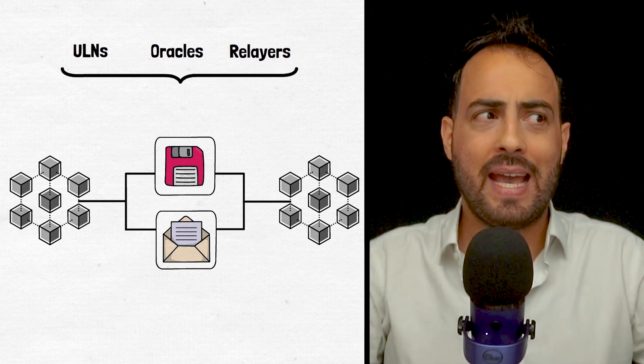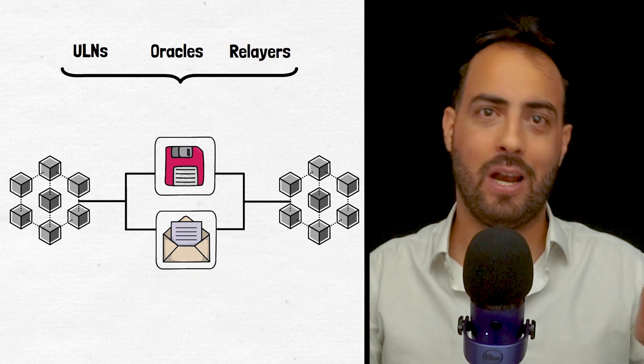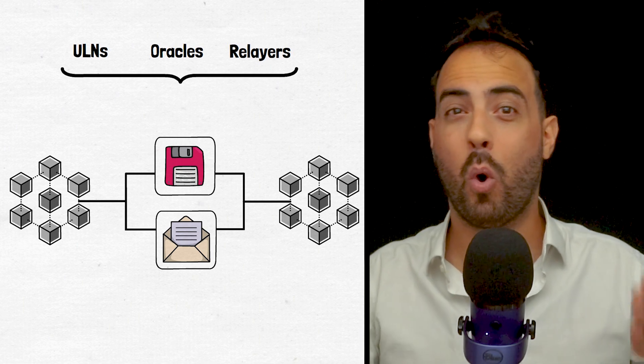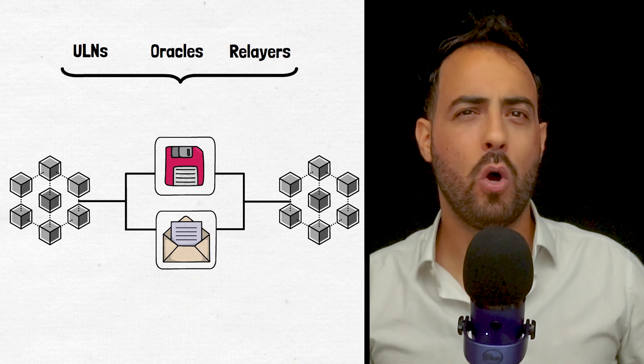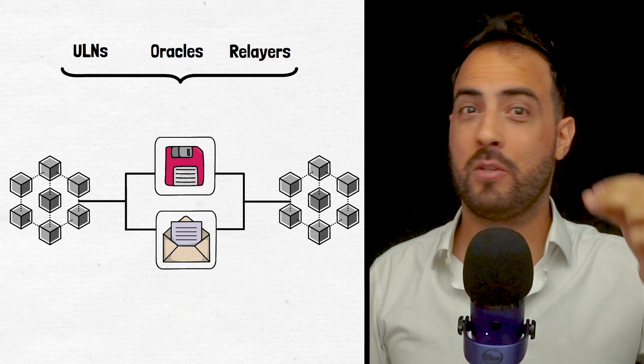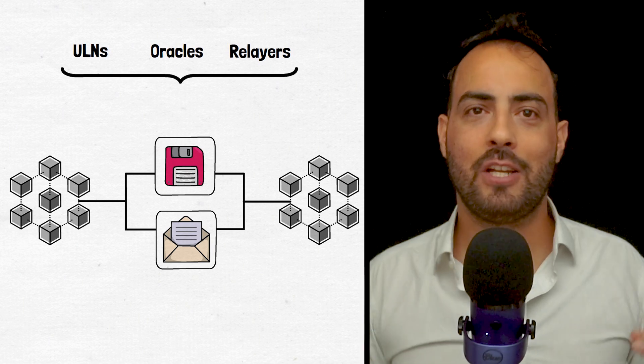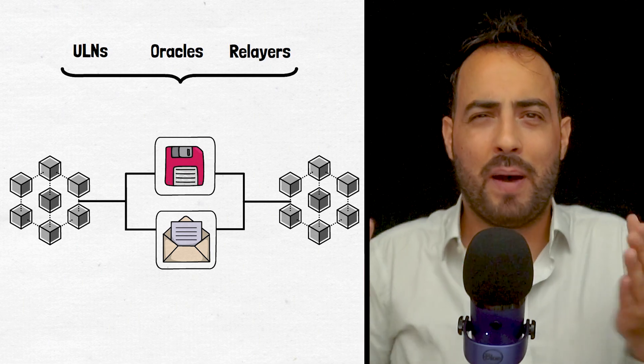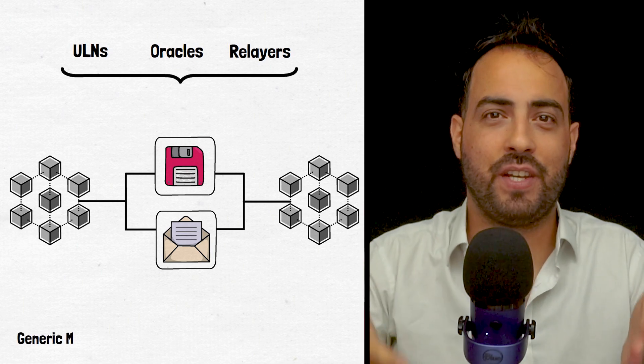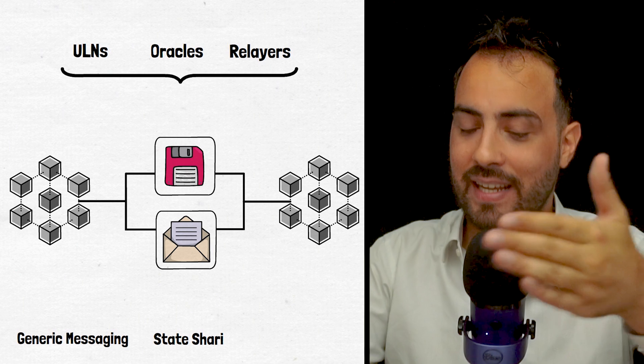However, being an interoperability protocol alone isn't particularly new or unique, so Layer 0 looks to distinguish itself from its competitors through innovations. These include the ultralight nodes I mentioned earlier, but also through generic messaging, state sharing, and instant finality.